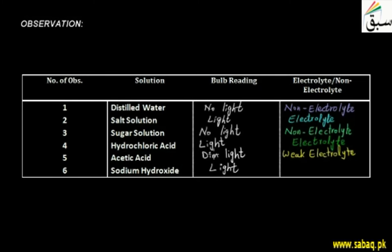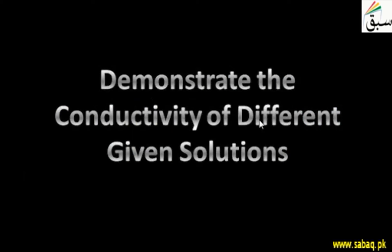Acetic acid in solution shows no complete dissociation — no complete breakdown into its respective ions — so there are only a few ions and only a little conduction, giving dim light. Finally, sodium hydroxide also gave bright light, so it is also an electrolyte. This was our practical to demonstrate the conductivity of different solutions: those solutions where the bulb lit up are electrolytes; those where it did not are non-electrolytes.